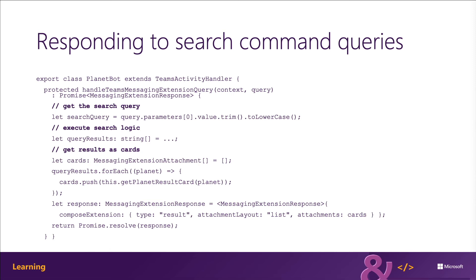It can be set to auth, which will prompt the user to authenticate, and it can also be set to config, which will prompt the user to set up the messaging extension. The attachment layout property can be either a list of results containing the thumbnails, titles and text fields, or a grid of thumbnail images. The attachments property is used when the type is set to result and contains an array of supported cards. If the type is set to message, an additional property of text can be used to set the plain text message that should be displayed, but when it's set to auth or config, you're going to use the suggested actions property to suggest additional actions for the user to do.